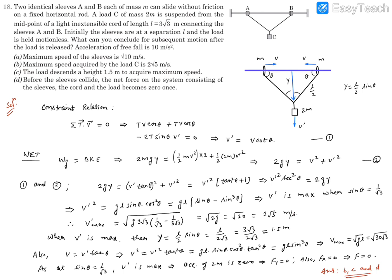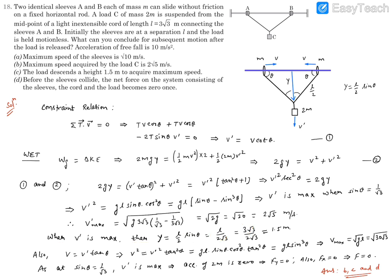Option C asks for the height descended by the load when it acquires maximum speed. At maximum v', sin θ = 1/√3, so y = (L/2)·sin θ = (3√3/2)·(1/√3) = 3/2 = 1.5 m. The load descends 1.5 meters to acquire its maximum speed. Option C is therefore also correct.